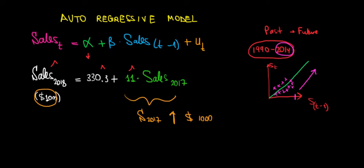then the sales in the next year, because next year is 2018, is gonna go up by the slope coefficient, which is 11 times, this is 11 units. So 11 times $1,000, sales in 2018 is gonna go up by 11 multiplied with $1,000. So that's gonna give us $11,000 more sales in the next year.